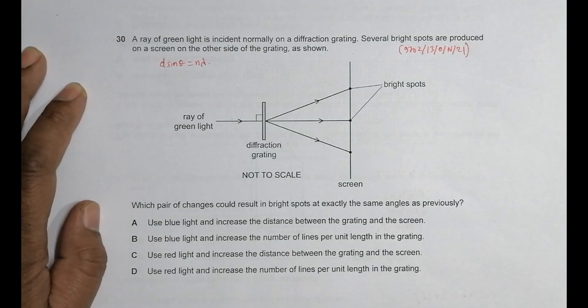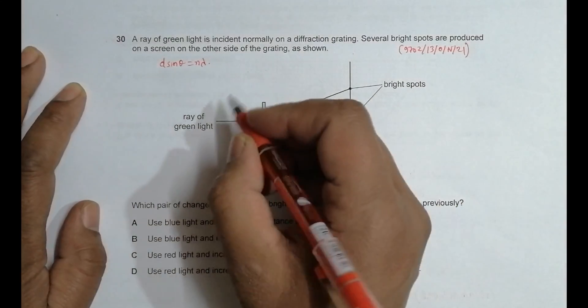This d is the grating space, the distance between one grating to another grating.